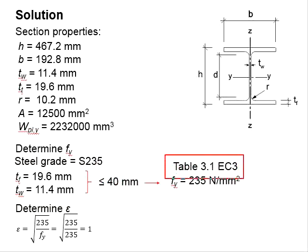the yield strength will be 235 N per mm squared. Substitute the fy into the equations. The epsilon is obtained as 1.0.